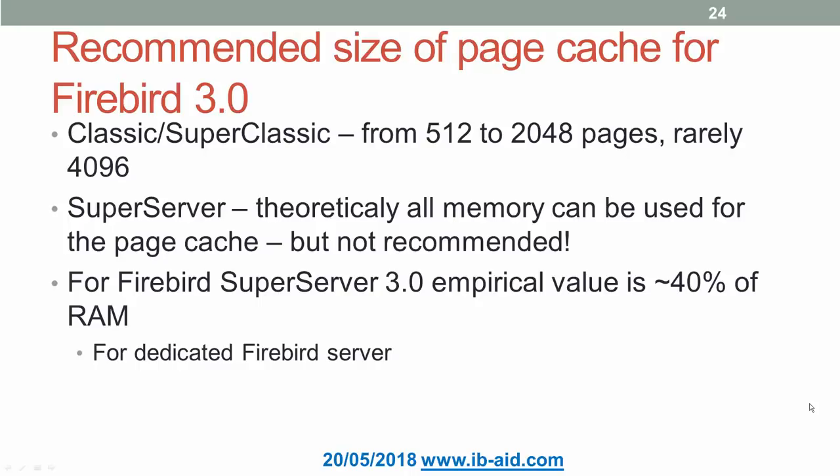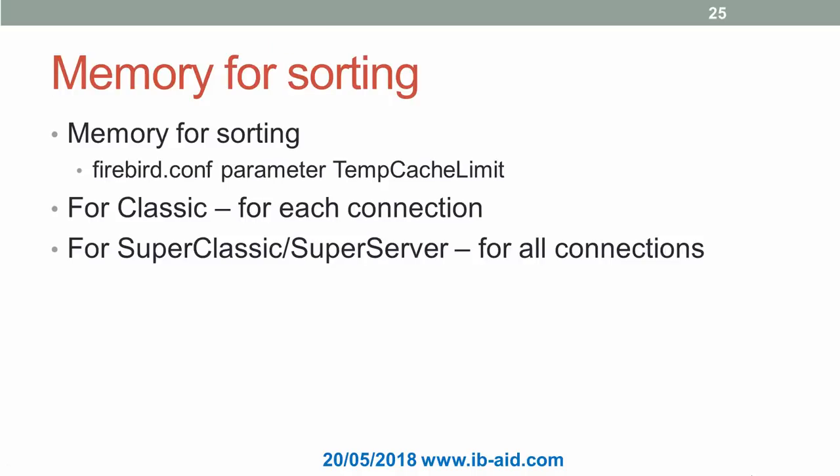On the majority of servers where Firebird coexists with other applications, this value is about 25%. For Classic and SuperClassic architectures in Firebird 3, recommendations are the same as for version 2.5. The next memory allocation to tune is memory for sorting. Every time a query uses GROUP BY, ORDER BY, DISTINCT, or a sort plan, Firebird sorts the appropriate values for the result set, allocating memory to perform sorting in RAM.